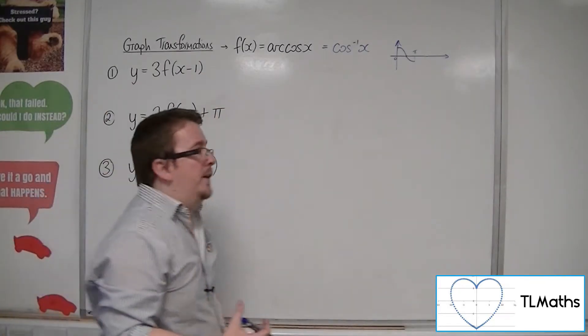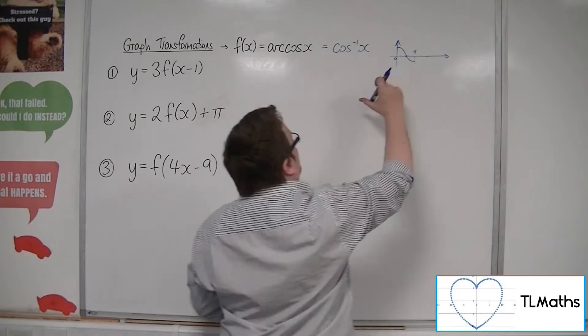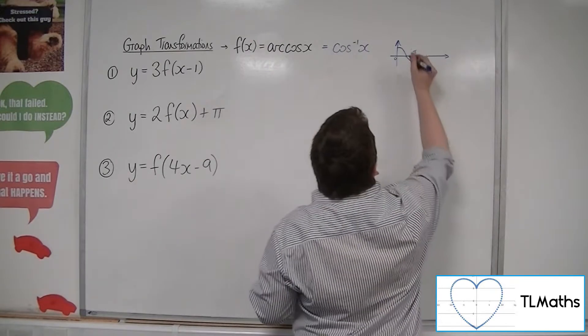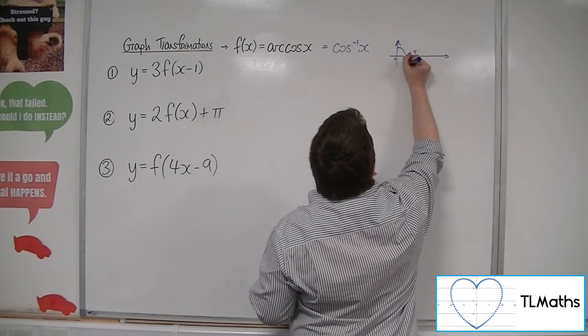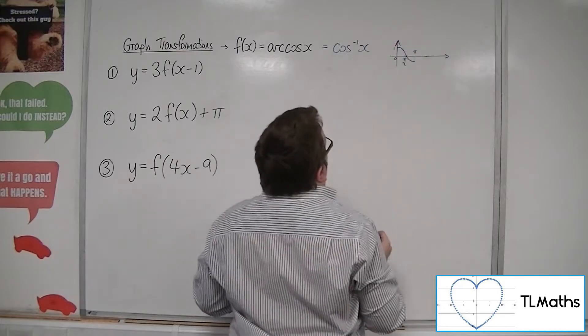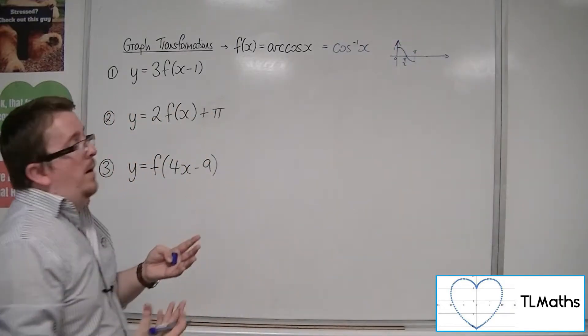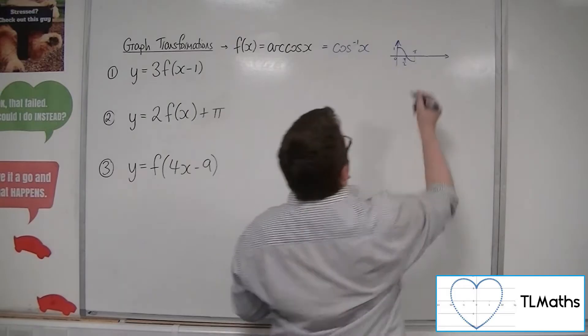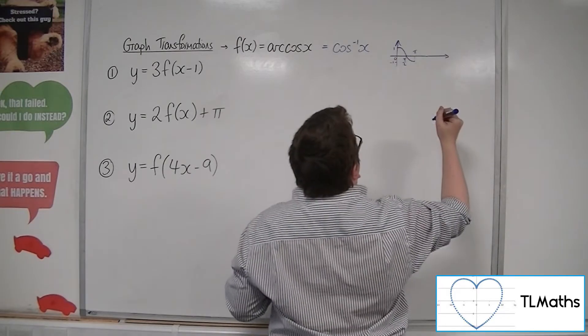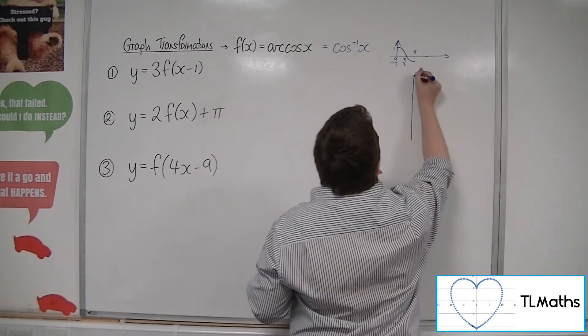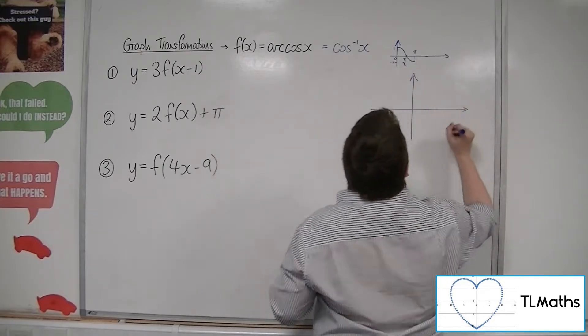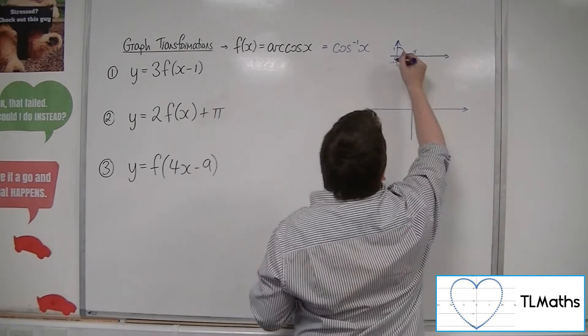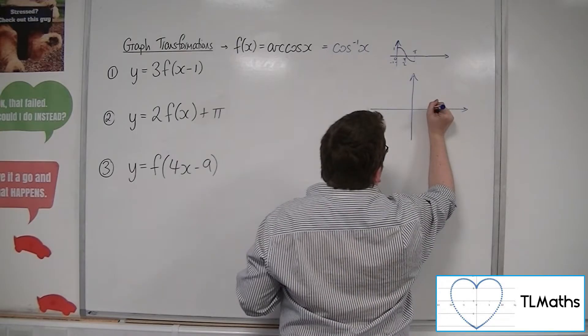Now an inverse function is found by reflecting it in the line y equals x. So these points that are important to it, the 0, the 1, the pi over 2, and the pi minus 1, they all get reflected in y equals x. So my curve looks like this. So 0, 1 is at 1, 0.